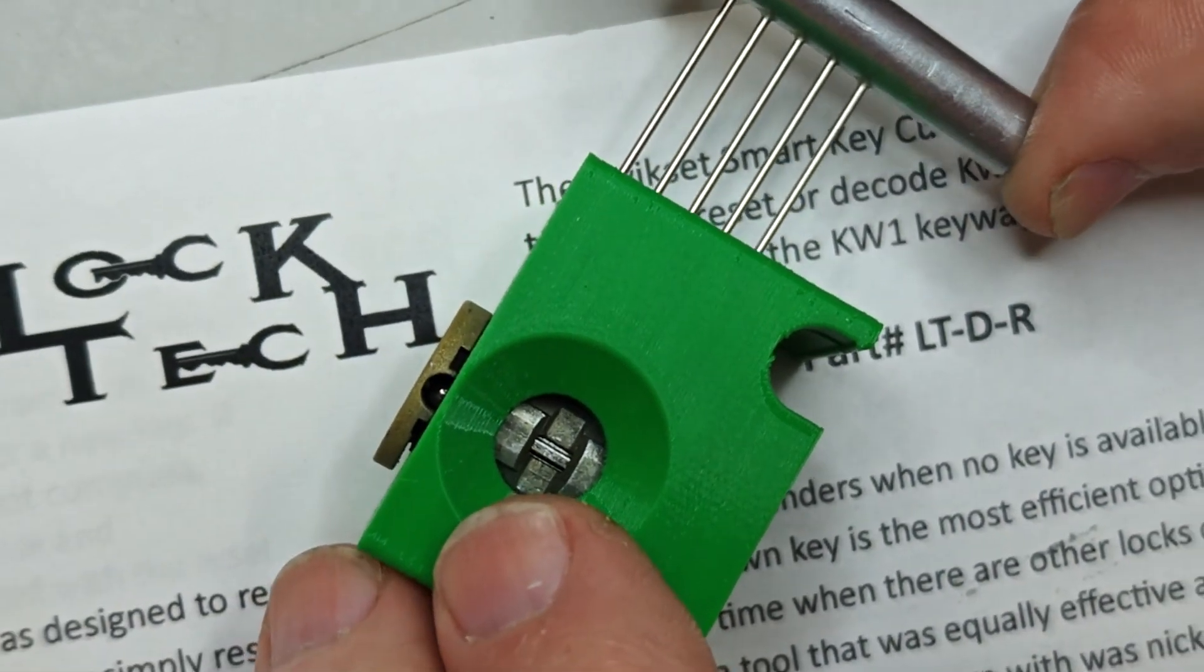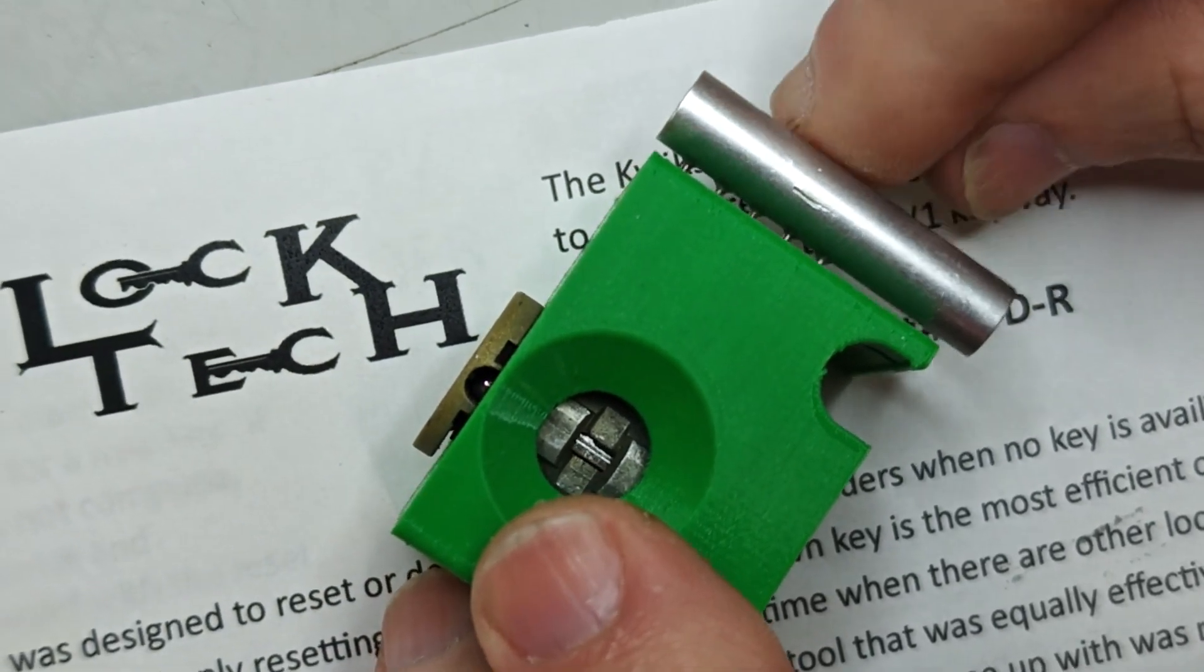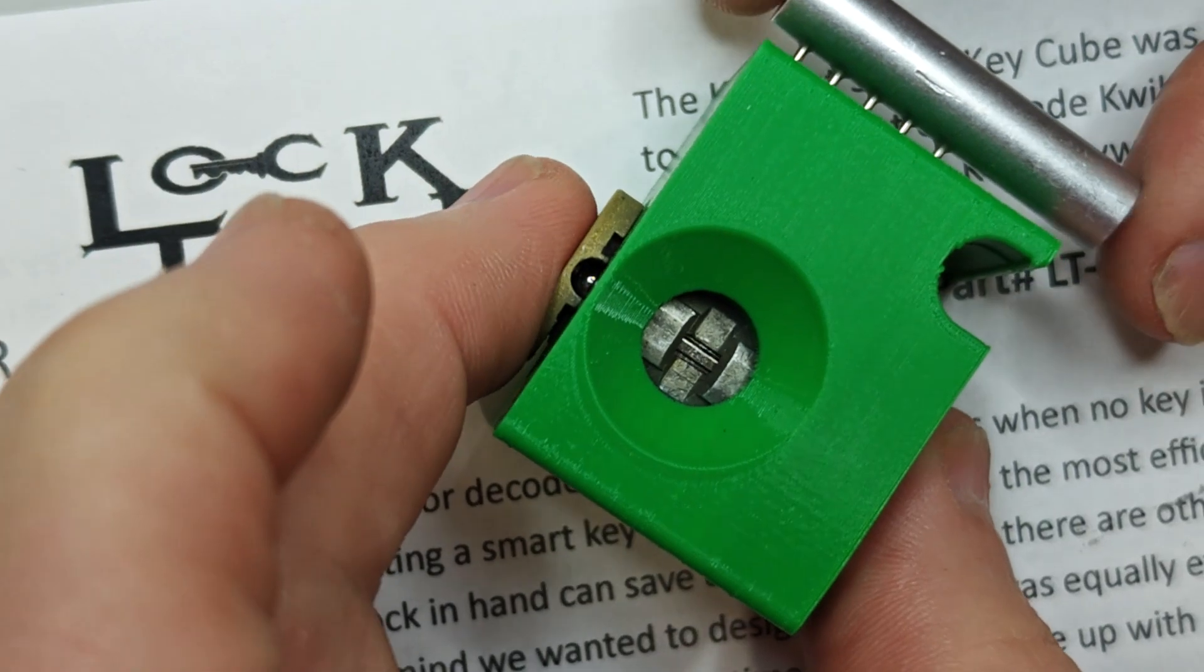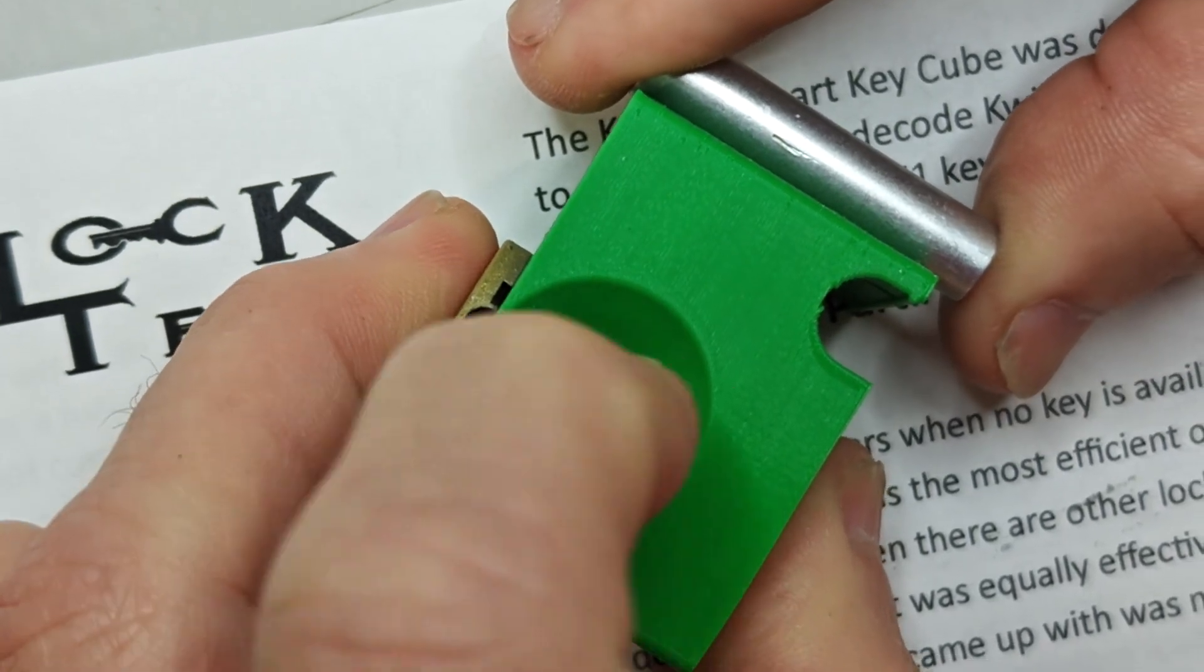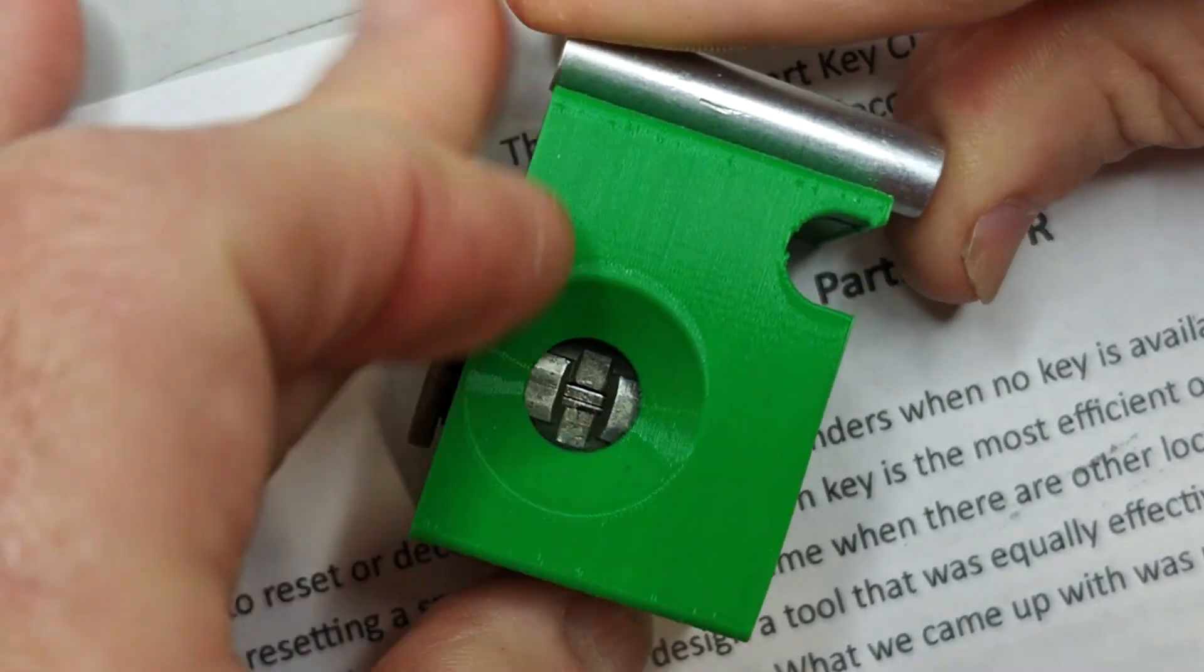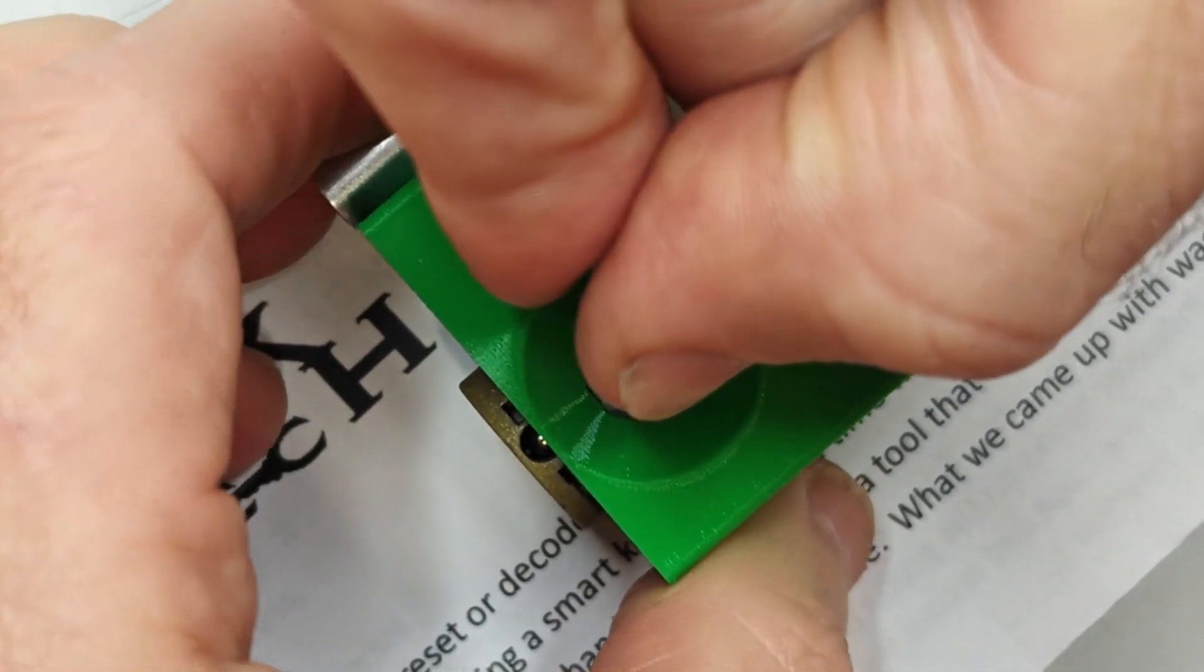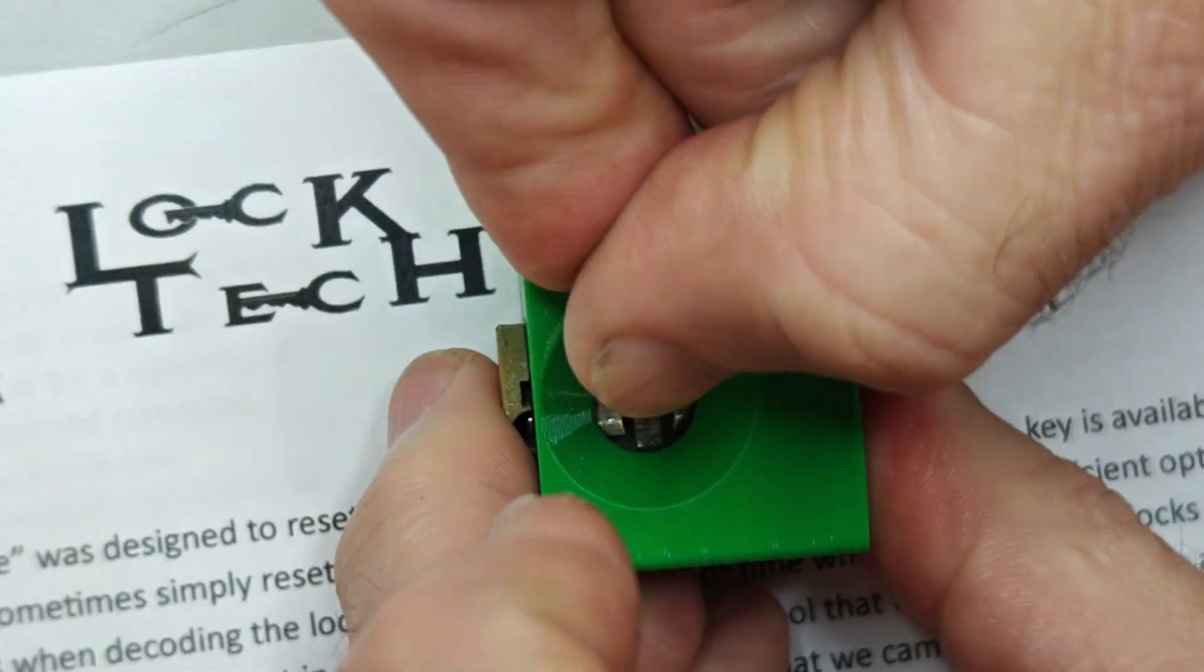Now when you insert the comb you're either going to get some spring tension or you're going to have a solid flat wall. You want the spring tension. When you feel the spring tension, rotating this back and forward, see springy now, you see the sidebar drop. So once the sidebar drops, take your probe or anything that can get down here and push the sidebar in. Take your comb out and then take your fingers and just rotate the cylinder.